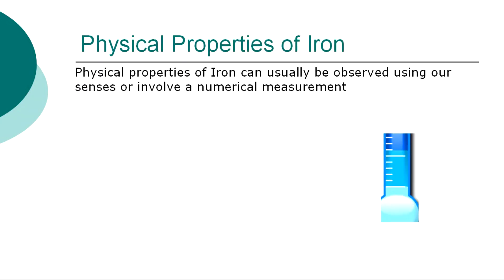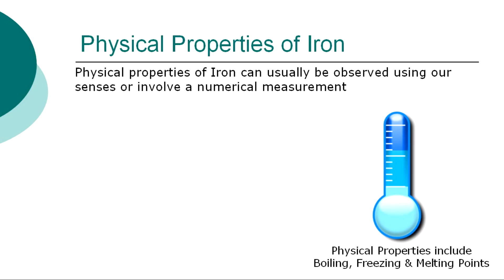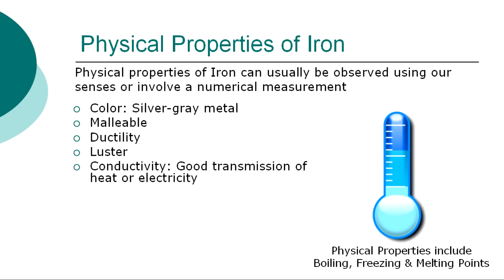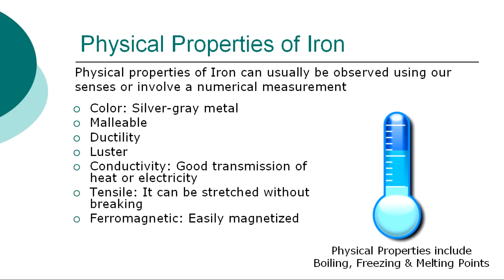The more specific physical properties of iron can usually be observed using our senses or involve a numerical measurement, such as determining its boiling, freezing, and melting points. The physical properties of iron are: color — silver-gray metal; malleability — capable of being shaped or bent; ductility — easily pulled or stretched into a thin wire; luster — has a shine or glow; conductivity — good transmission of heat or electricity; tensile — it can be stretched without breaking.